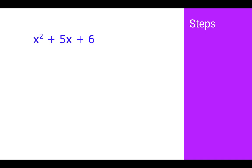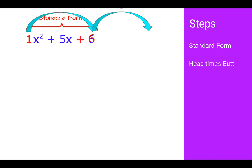So here is our problem, x squared plus 5x plus 6. This is in standard form, and I checked that. The next thing I'm going to do is head times butt. We have the first number times the last number if it's in standard form. So in front of this x squared, we have the 1. We say 1 times 6 is 6, that's head times butt.